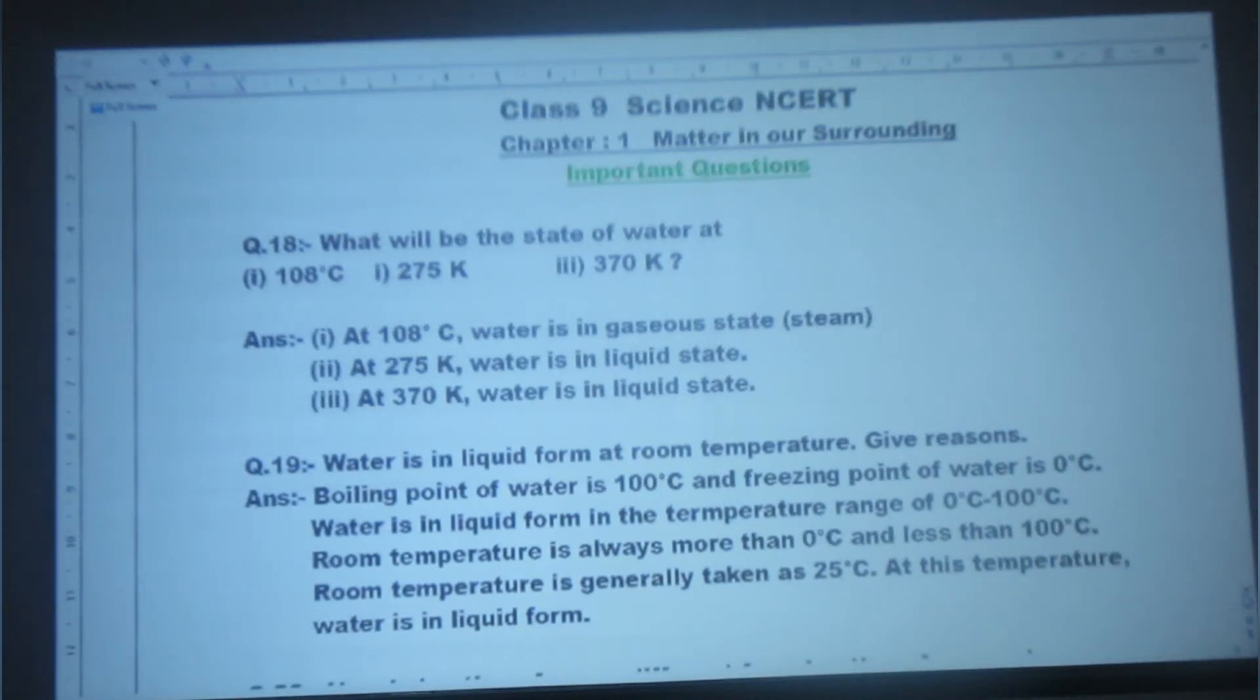Next question: Water is in liquid form at room temperature. Give reasons. Answer: Boiling point of water is 100 degree Celsius and freezing point of water is 0 degree Celsius. Water is in liquid form in the temperature range of 0 degree Celsius to 100 degree Celsius. Room temperature is always more than 0 degree Celsius and less than 100 degree Celsius. Room temperature is generally taken as 25 degree Celsius. At this temperature, water is in liquid form.